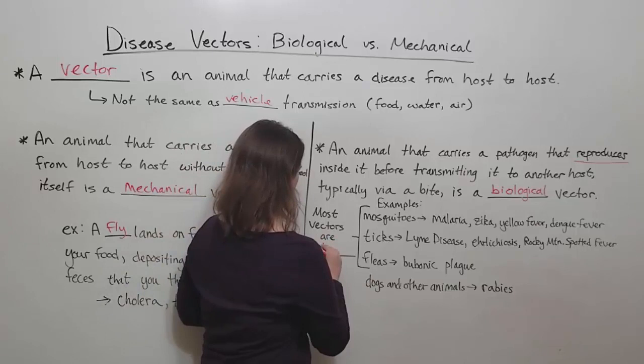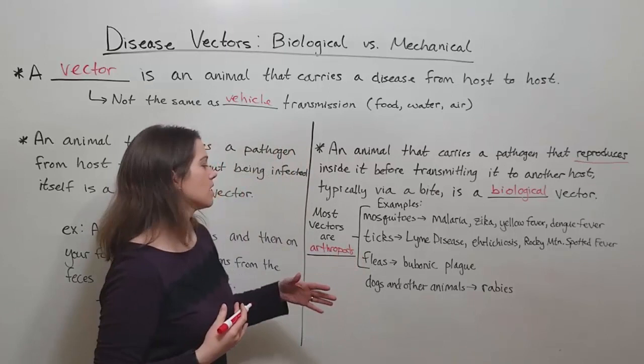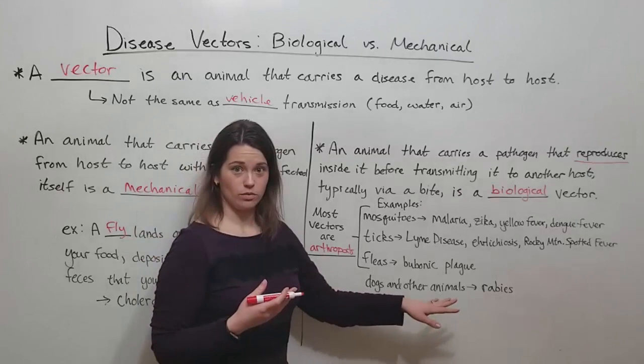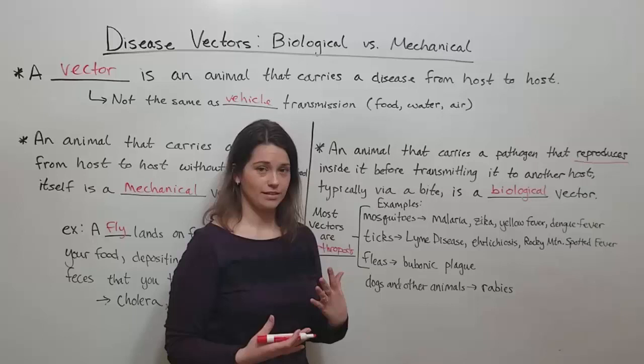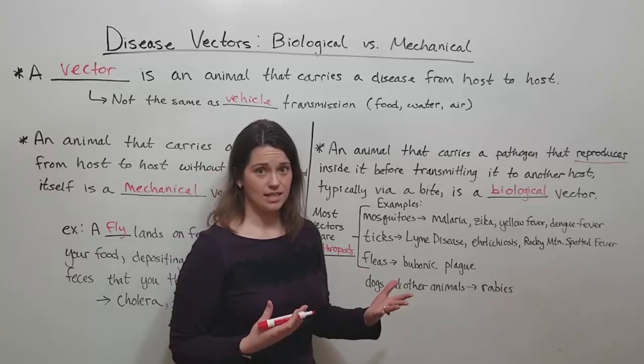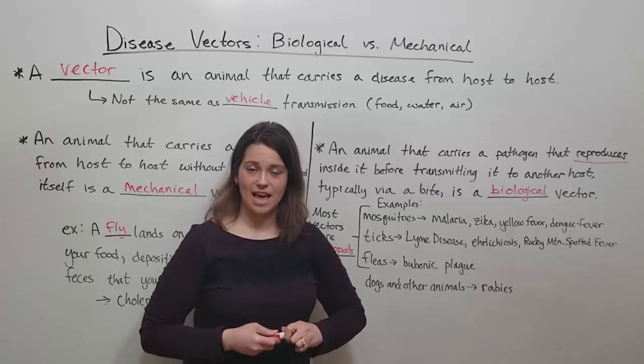Arthropod meaning insects. However, not every vector is an arthropod. Some examples of other vectors would be dogs and other animals that can transmit rabies. These are biological vectors because the dog or other animals that transmit rabies are infected with the rabies virus themselves. But dogs and other vertebrate animals are not arthropods. Another example is a fungal disease that can be transmitted through a biological vector, such as ringworm — people can actually get ringworm, caused by a fungus, from their pets.